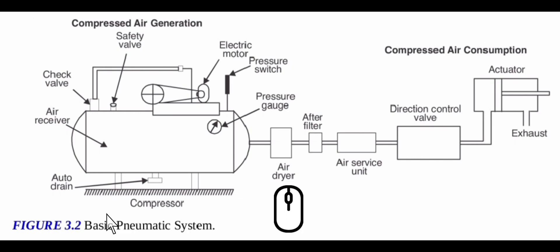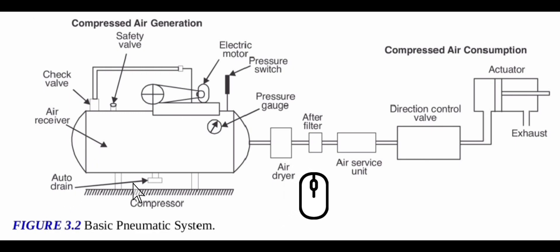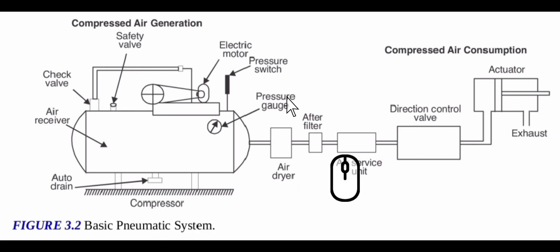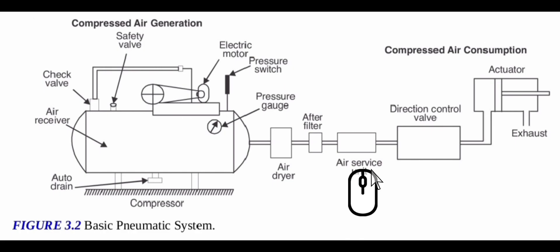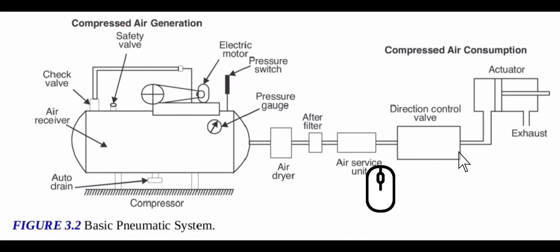A typical pneumatic power system includes the following components: 1. Compressor, 2. Electric motor, 3. Air receiver, 4. Pressure switch, 5. Safety valve, 6. Auto drain, 7. Check valve, 8. Pressure gauge, 9. Air dryer, 10. After filter, 11. Air service unit, 12. Direction control valve, 13. Pneumatic actuator.